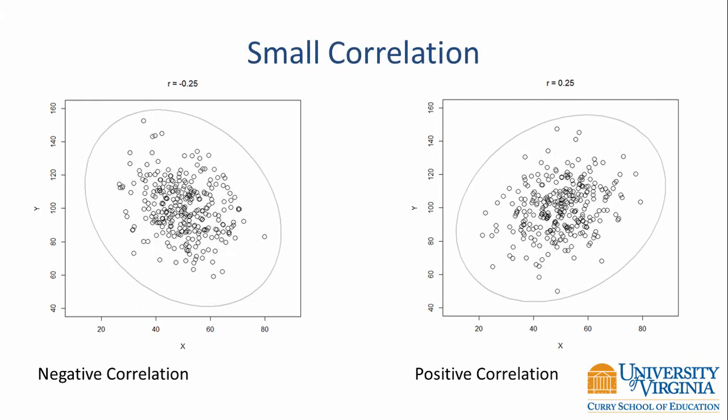Looking at a small correlation, the pattern is less evident. On the left with a correlation of negative 0.25, it's really hard to judge just by looking at the picture. With the ellipse drawn around it, it does seem to point downward, but it's less evident because the correlation is so small. The same is true on the right with a correlation of positive 0.25 — it's very difficult to visually judge the strength or direction of that relationship, even with the ellipse.